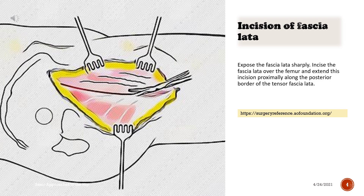Incision of fascia lata. Expose the fascia lata sharply. Incise the fascia lata over the femur and extend this incision proximally along the posterior border of the tensor fasciae latae.